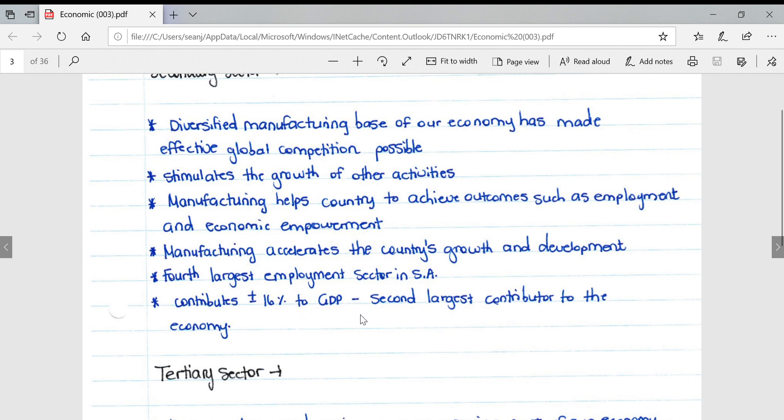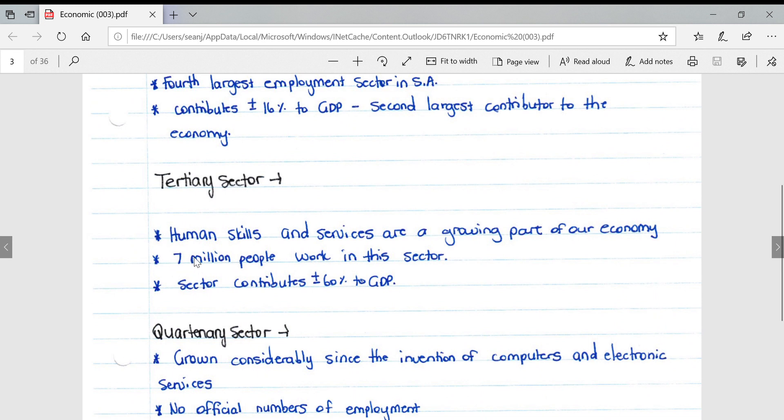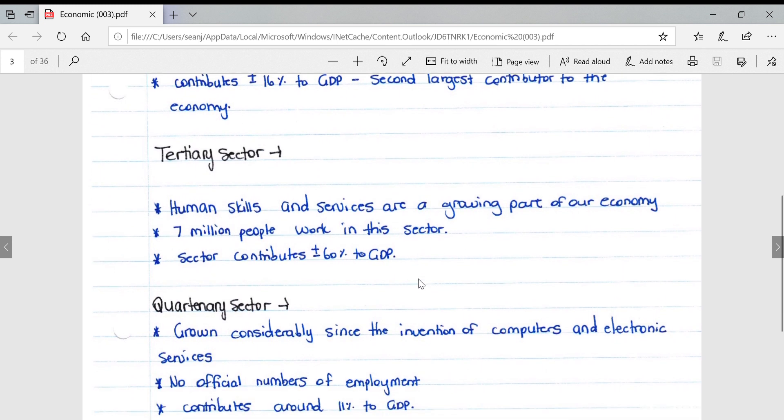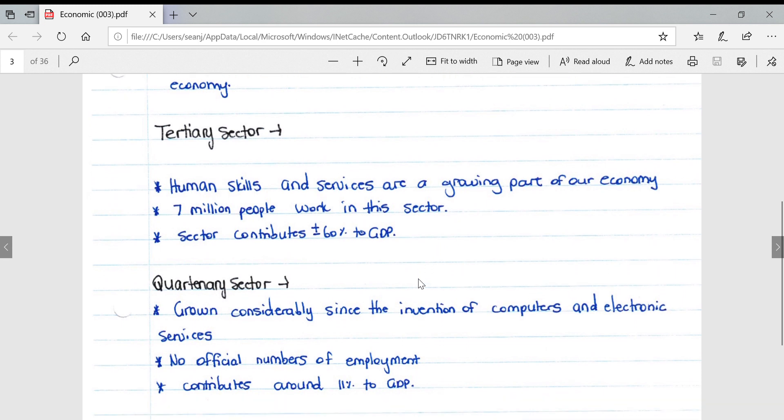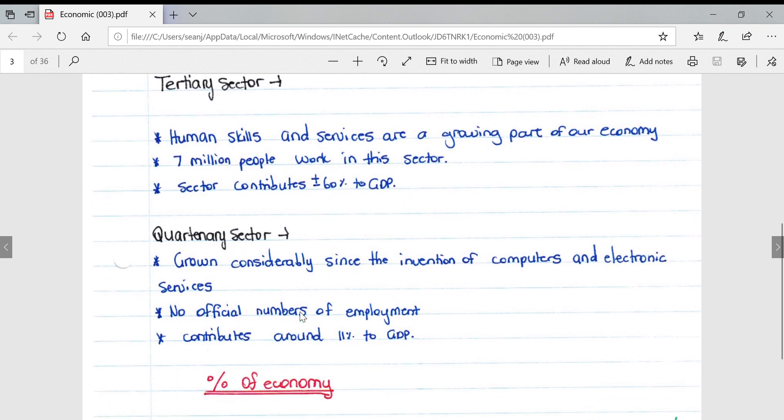The tertiary sector - human skills and services - is a growing part of our economy. Seven million people work in the sector, which contributes about 60% to the gross domestic product, making it our biggest contributor.